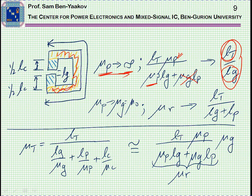This is, by the way, a very known formula, an approximate equation for a relative permeability of gapped core. This now has nothing to do with the bias, it's just a regular core with a gap.